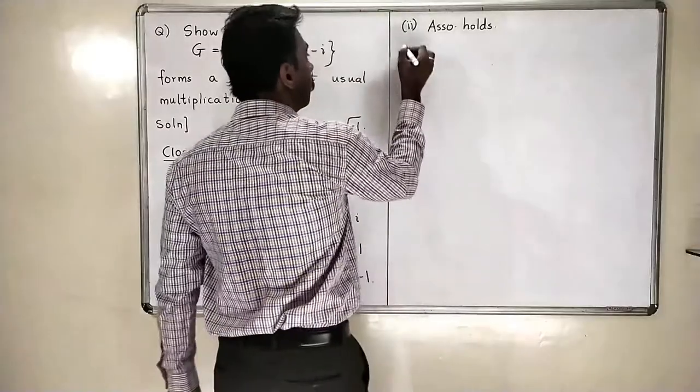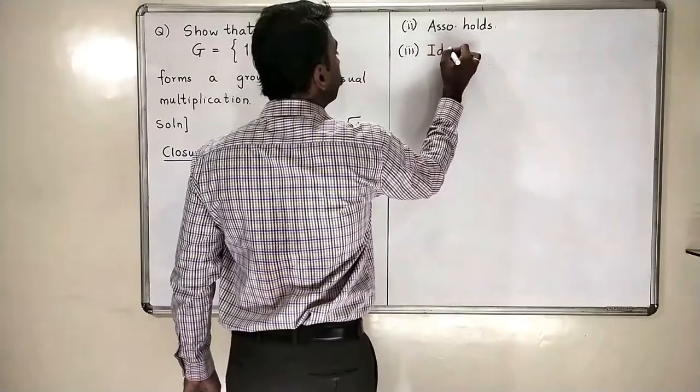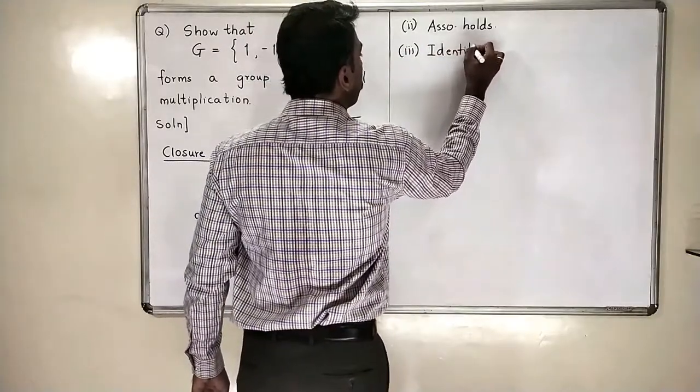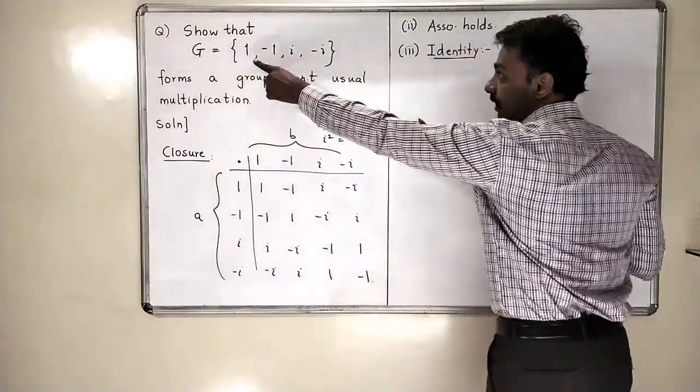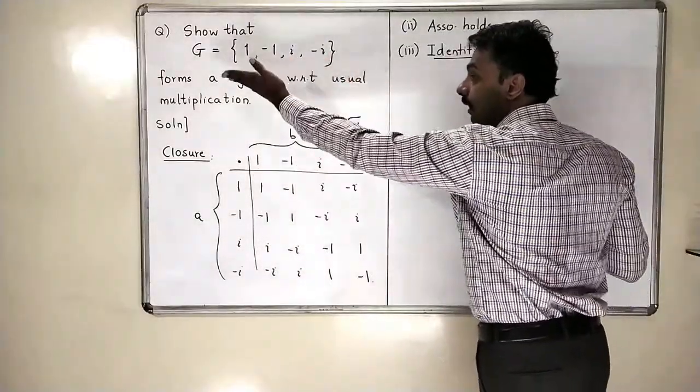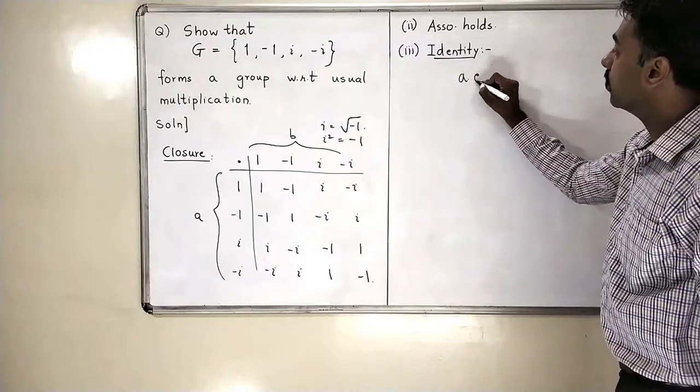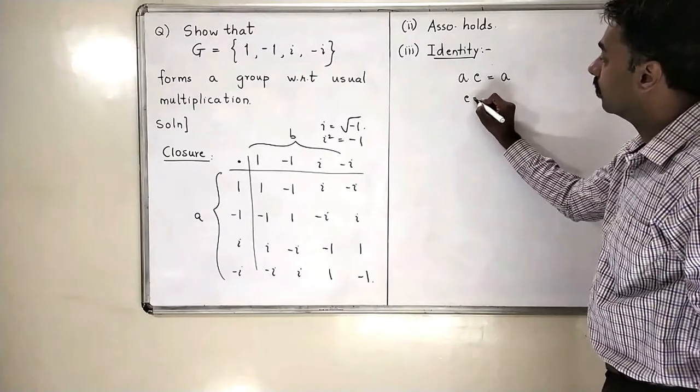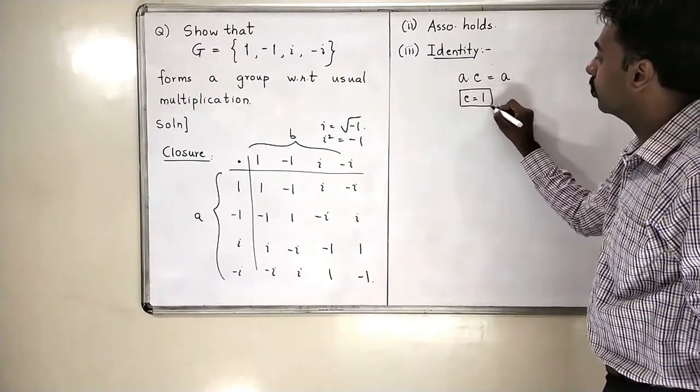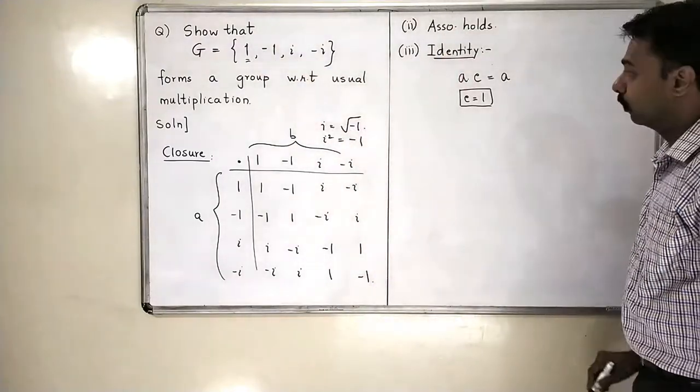We can check this. Third is identity. Do I see any element here in this set, which I multiplied with any other element, I will get the same element back? a into e should be, again, equal to the same a. This element is clearly identity is 1. So this 1 is the identity of my group.